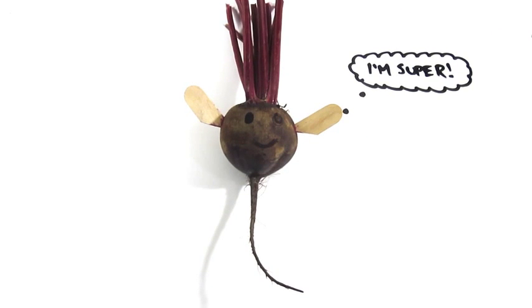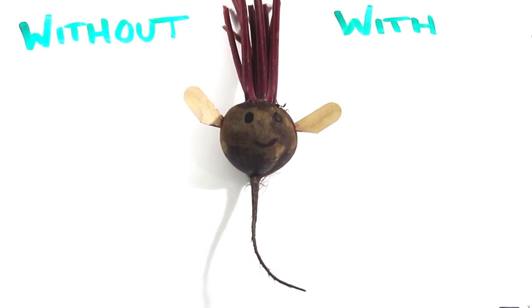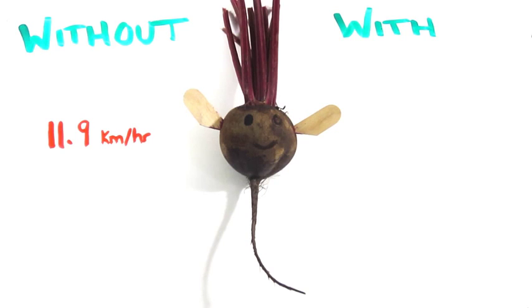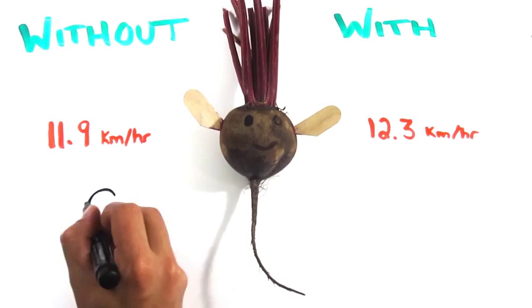In a recent study, participants ran once with and once without having consumed beetroot prior to their run. The results? Without the beetroot, they ran an average of 11.9 km an hour. But after having consumed the beetroot, they ran an average of 12.3 km an hour.